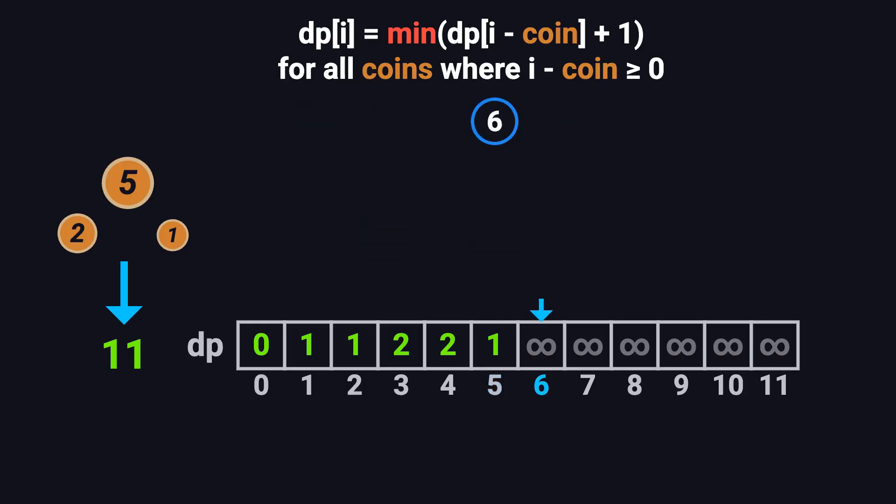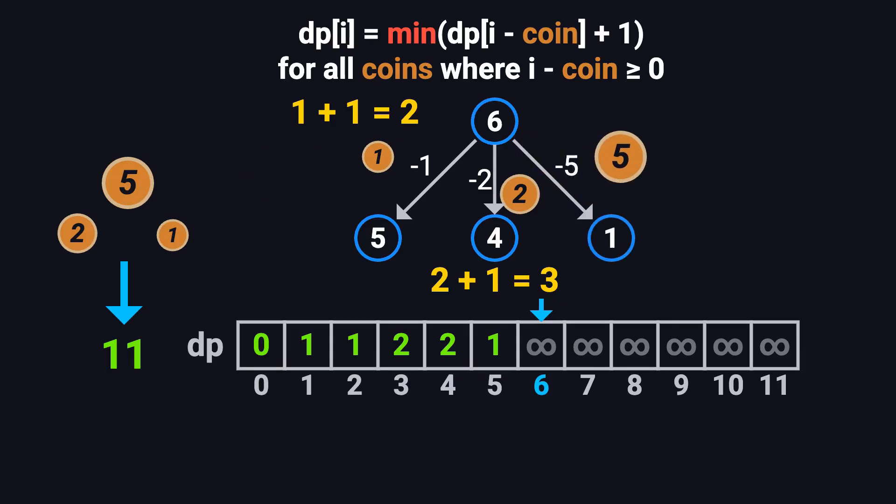Same process for dp[6]. Use a 1 coin. 6 minus 1 equals 5. dp[5] is 1. So total is 1 plus 1 equals 2. Use a 2 coin. 6 minus 2 equals 4. dp[4] is 2. Total is 2 plus 1 equals 3. Use a 5 coin. 6 minus 5 equals 1. dp[1] is 1. Total is 1 plus 1 equals 2.